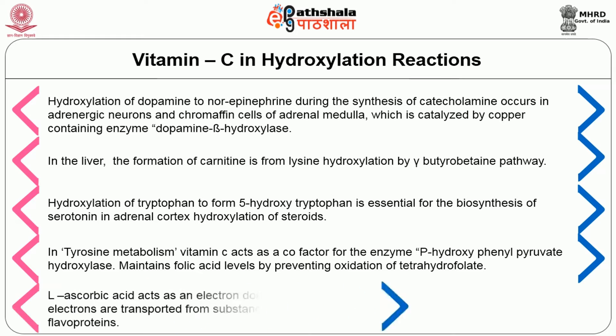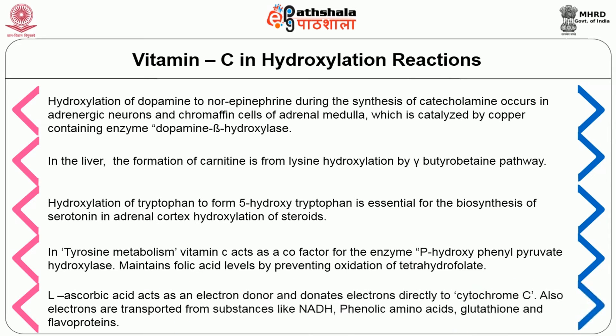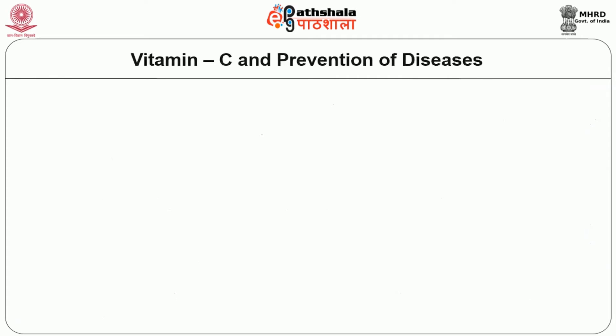L-ascorbic acid acts as an electron donor and donates electrons directly to cytochrome C. Electrons are also transported from substances like NADH, phenolic amino acids, glutathione and flavoproteins.